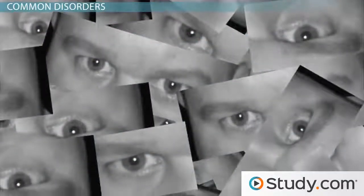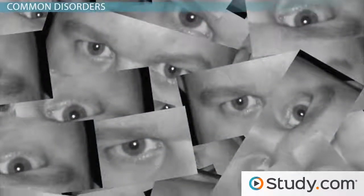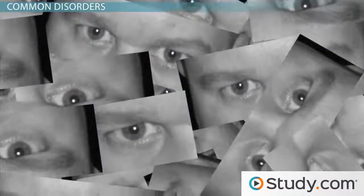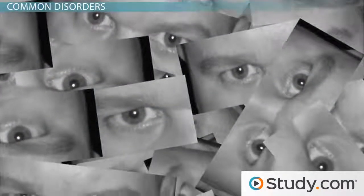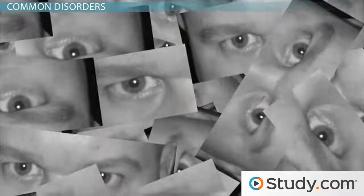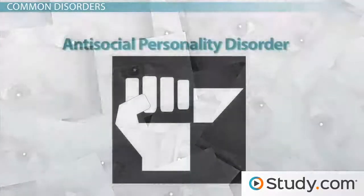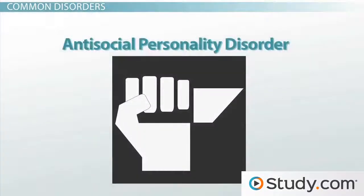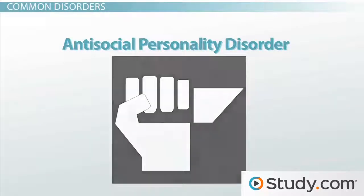Therapy along with medication is an important part of treatment for schizophrenia. Antisocial personality disorder involves having a very small conscience. People with antisocial personality disorder often manipulate or harm others and may have a history of breaking the law. Antisocial personality disorder is very difficult to treat because patients often charm and manipulate their therapists.